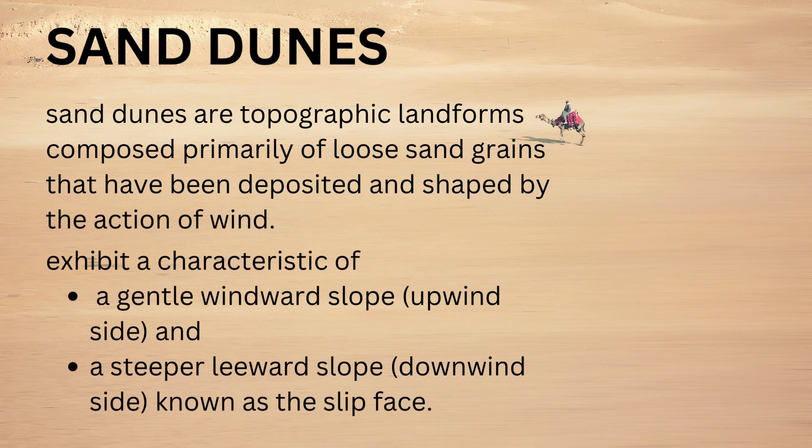First, sand dunes. Sand dunes are the topographic landforms composed primarily of loose sand grains that have been deposited and shaped by the action of wind. They exhibit characteristics of a gentle windward slope — that means the upwind side — and a steeper leeward slope, also known as the slip face.